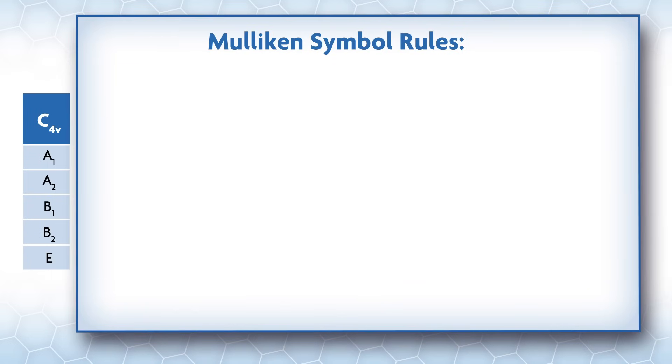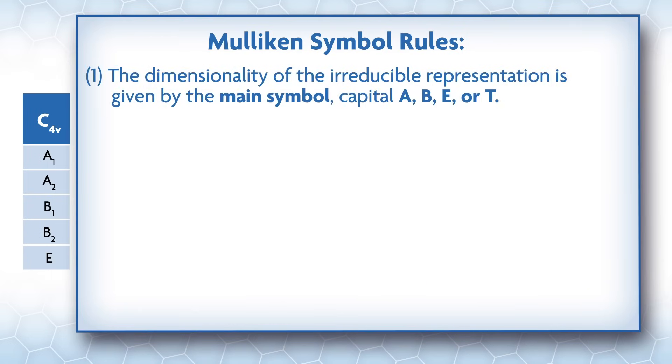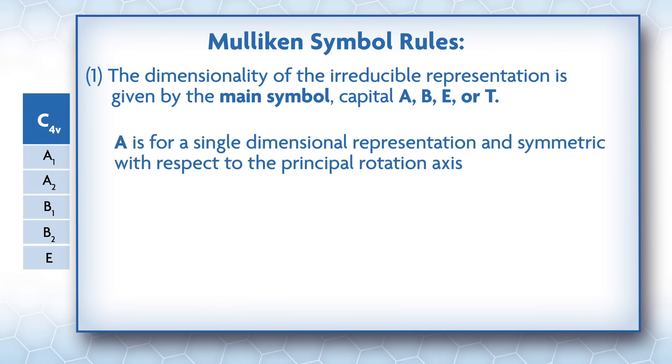Mulliken symbols are assigned using a few rules. The dimensionality of the irreducible representation is given by the main symbol: capital A, B, E, or T. A is for a single-dimensional representation and symmetric with respect to the principal rotation axis. B is also for a single-dimensional representation and anti-symmetric with respect to the principal rotation axis.